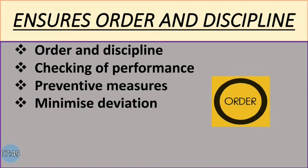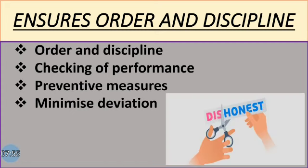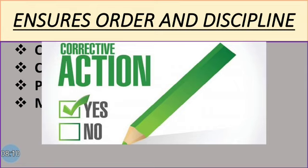Controlling ensures order and discipline. Controlling creates an atmosphere of order and discipline in the organization. It helps to reduce dishonest behavior on the part of employees. Discipline is maintained by continuous checking of performance. Whenever required, preventive measures or corrective actions are taken to minimize any deviations in the set targets.